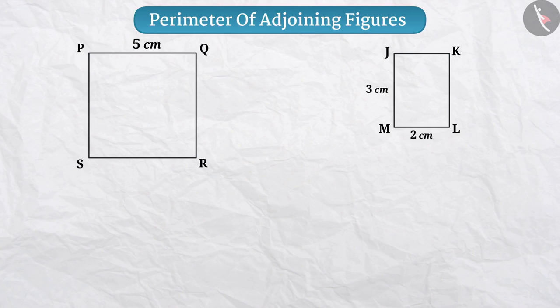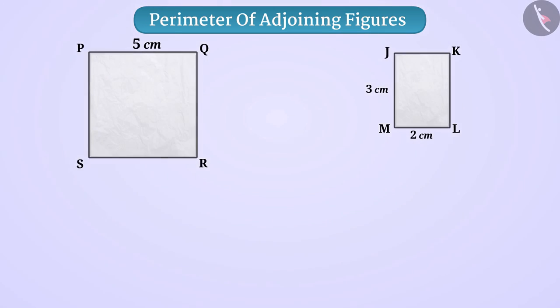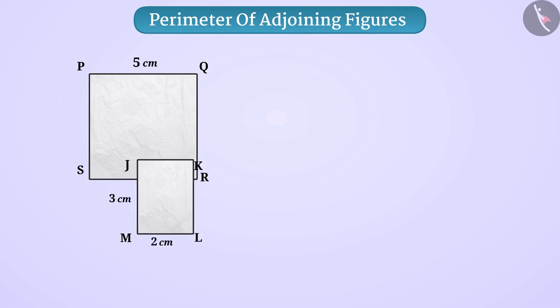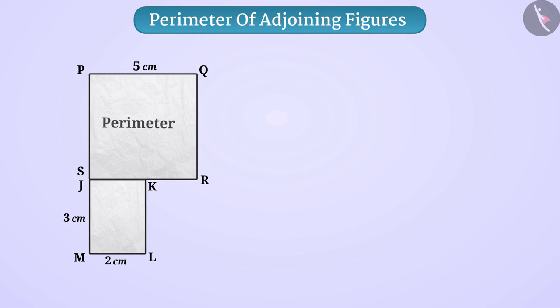Now, imagine if we cut the square PQRS and the rectangle JKLM from paper and keep them adjacent, then what will be the perimeter of the new shape PQRKLM to be created? Let me tell you.